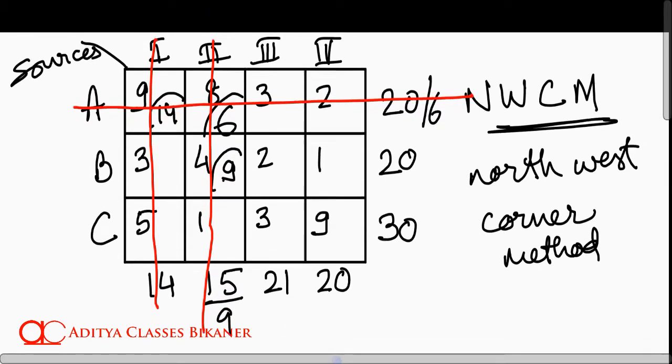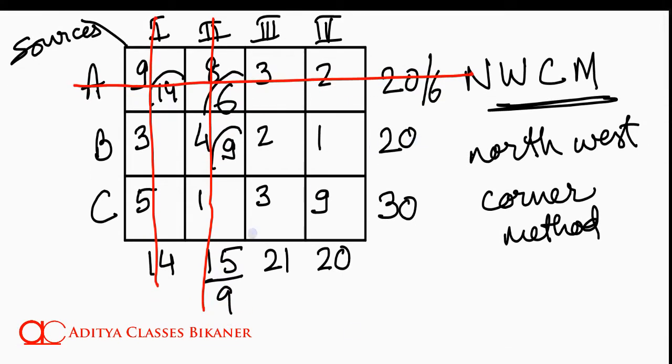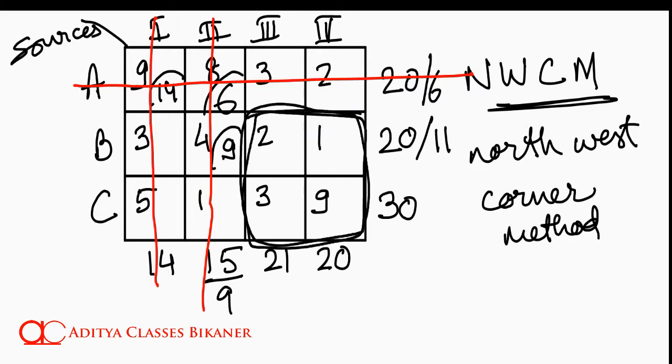As far as B is concerned, it was producing 20. It has supplied 9. So still 11 units remain to be assigned. Now if I look at my matrix, this is my matrix. What is the North West corner? This is the North West corner. How much can I assign over here?